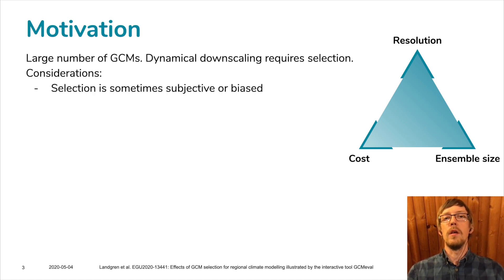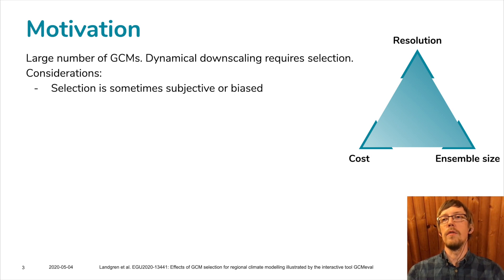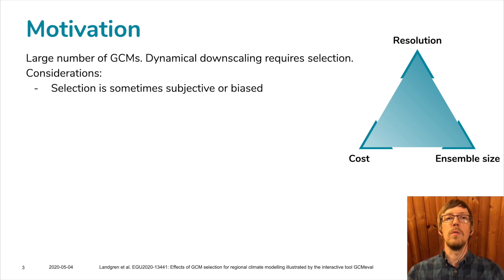There are different considerations. For example, how people select models from an ensemble can often be subjective, and it can also turn out that when you analyze the models that you have selected, for some metrics you could be biased — for example, having selected only models that have a very strong warming in a certain region. There is also the sensitivity of choices in the selection process: how you make your priorities will influence the results.